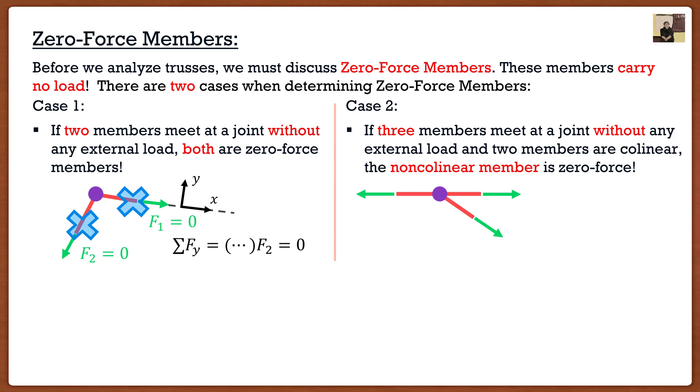Notice how my two top members are parallel with each other, so they're collinear, and then I have a third member that is not collinear. If this is the case, then that third member is actually going to be zero force. From there I can say that F1 and F2 are going to be equal to each other but not zero, while F3 is actually going to be equal to zero. The proof for this is just the same as before. If I were to go summation of forces in the y direction, my only force in the y direction is F3, so it must be equal to zero.